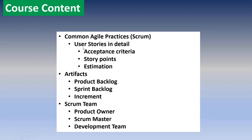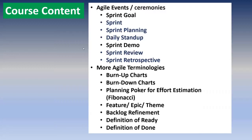Coming to Scrum, we are going to discuss user stories — how to estimate them, what is acceptance criteria, what are story points — everything in detail. We will discuss Scrum artifacts: product backlog, sprint backlog, and increment. We will also cover the Scrum team — what are the different roles available — and we are going to discuss Agile ceremonies and Agile events.